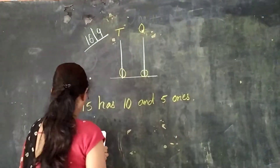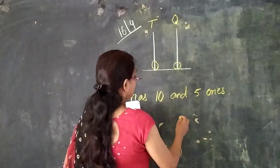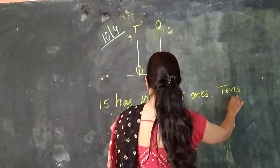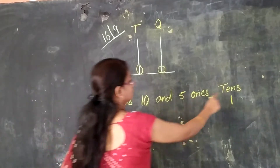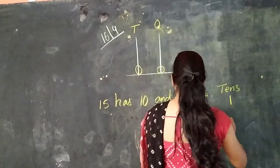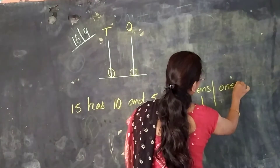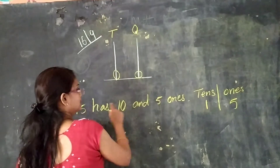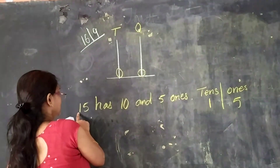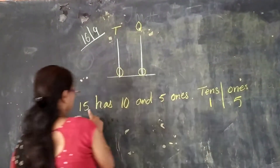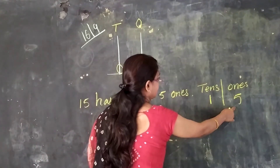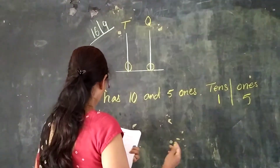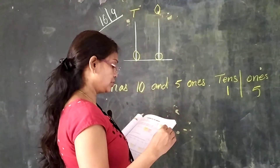So here how it will be, we will see children. In tens place, how many are there children? One. And in ones place, how many? Five are there. See — in tens place one we have. This is fifteen, no children? This is in tens place: one. This is in ones place: five. Right? Tens: one, and ones: five.